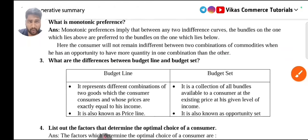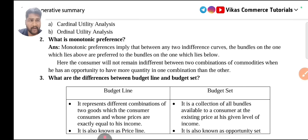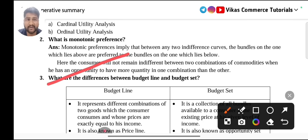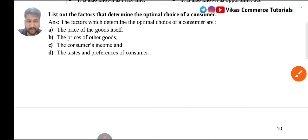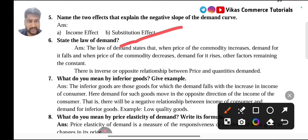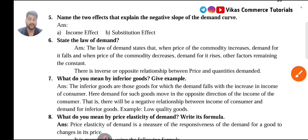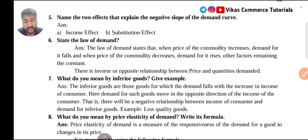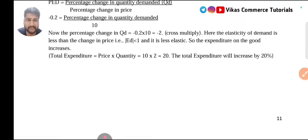To sum up from Chapter 2: you may skip monotonic preference if needed, but the most important must-study question is the difference between budget line and budget set. Also study the law of demand and questions number six, seven, and eight. These are four important questions from this chapter. Theory of Consumer Behavior is a 20-marks oriented chapter, so study as many questions as possible — questions six, seven, eight, and the difference between budget line and budget set.